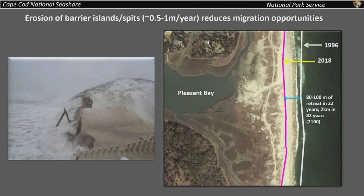Erosion of the barrier islands, which themselves are landforms that could provide opportunities for migration, are eroding away pretty quickly — retreating large distances after every winter storm. That again limits opportunities for migration as well.